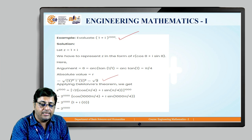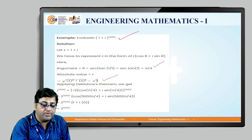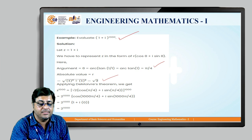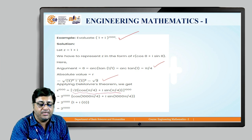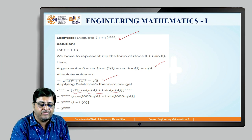Then θ = tan⁻¹(1/1), that is tan⁻¹(1), that is π/4. So we get the polar form of 1 + i as √2 times (cos π/4 + i sin π/4). And that is why z raised to 1000 will be [√2 times (cos π/4 + i sin π/4)] raised to 1000.